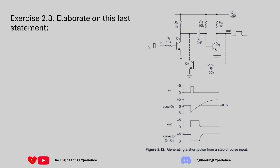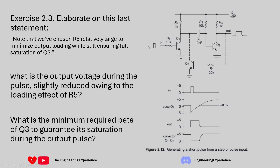The exercise is asking us to elaborate on the sentence: 'Note that we've chosen R5 relatively large' — R5 being this component here — 'to minimize output loading while still ensuring full saturation of Q3, which is this component over here.' So we need to elaborate on this sentence, and the first question is: what is the output voltage during the pulse, slightly reduced owing to the loading effects of R5?